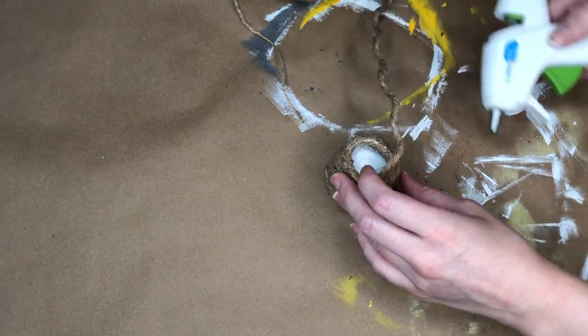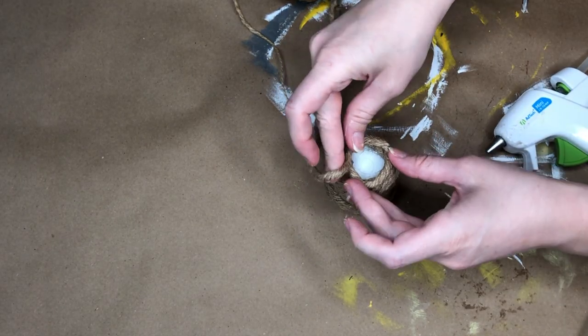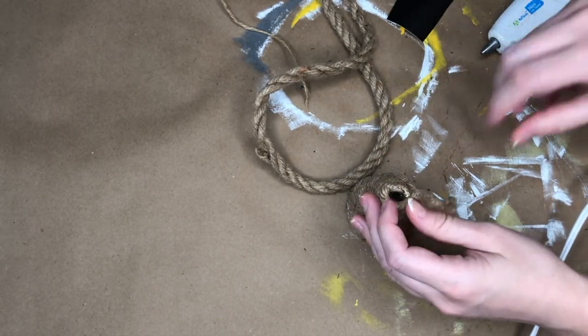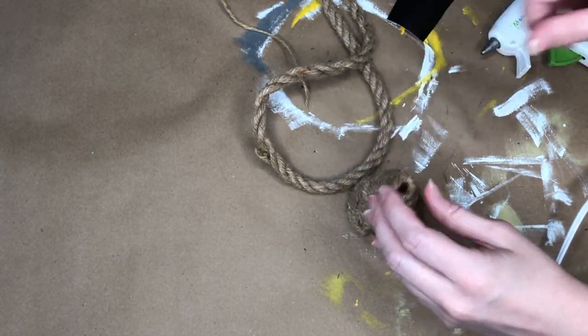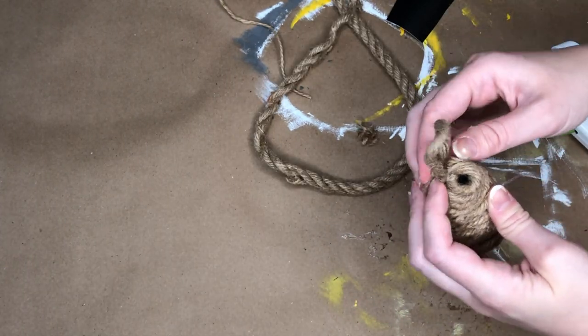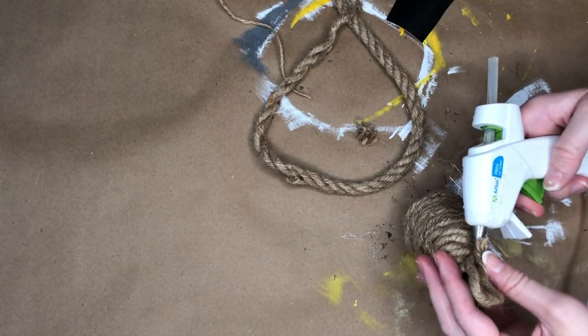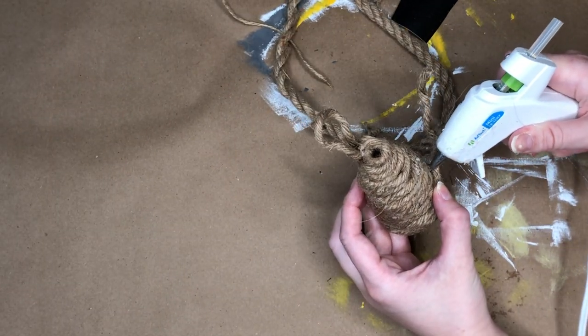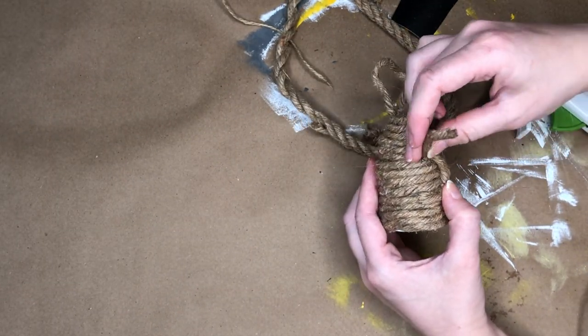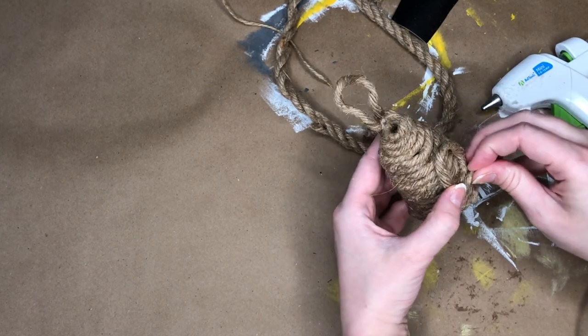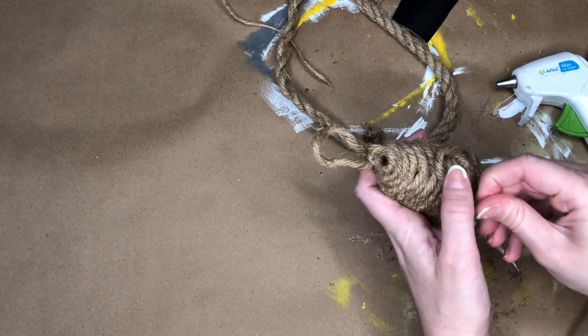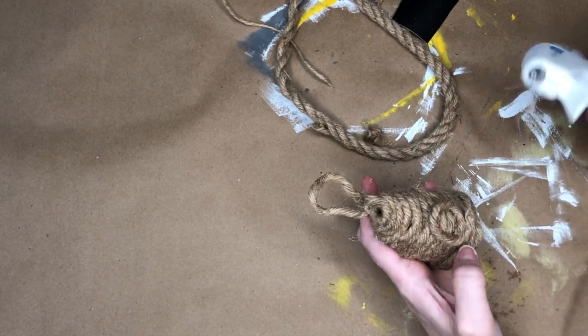Once I wrapped the jute and the hot glue all the way around the K-cup I wanted to add a little hanger on the beehive so I just took some more of that nautical rope and made a loop on the back of our hive. And it's definitely starting to look like a beehive but to really drive the beehive point home I took another piece of nautical rope and made a circle on the front of our hive and that's going to act as the entrance to our beehive.